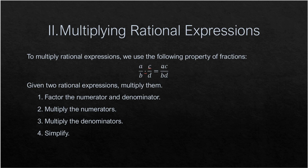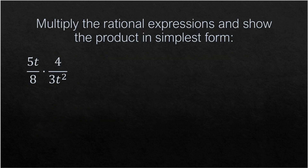Before we multiply, we first need to factor the numerator and denominator. Then, after multiplying the numerators together and the denominators together, we can simplify the expression. Let's illustrate this with the following example: (5t/8) multiplied by (4/3t²).